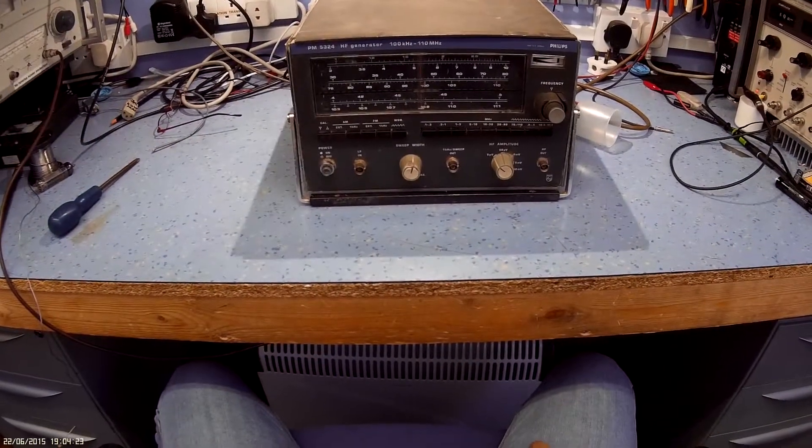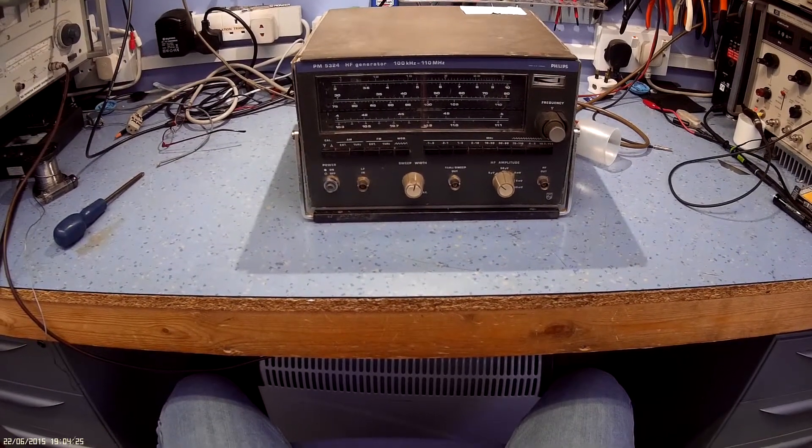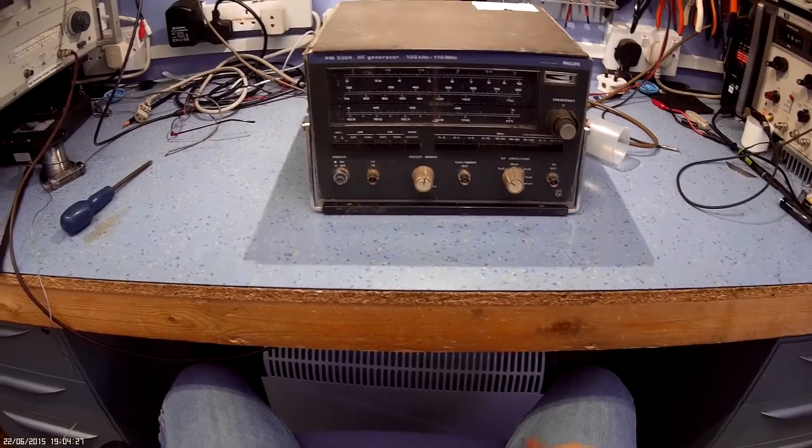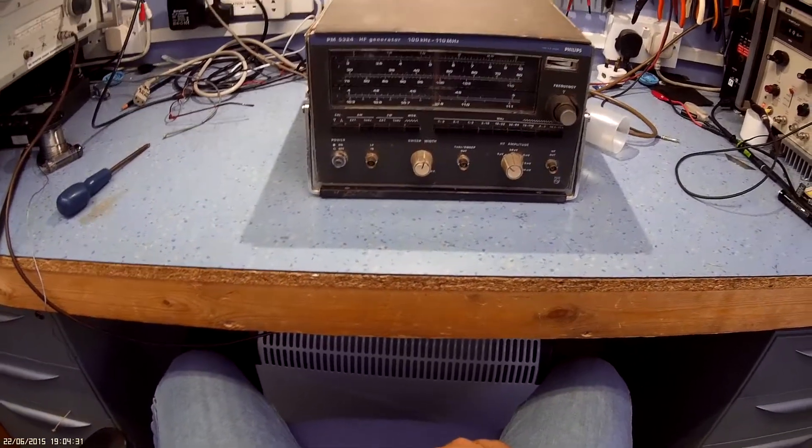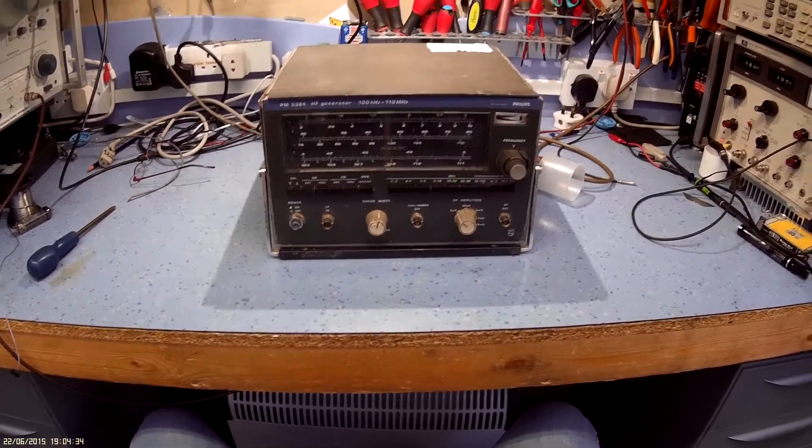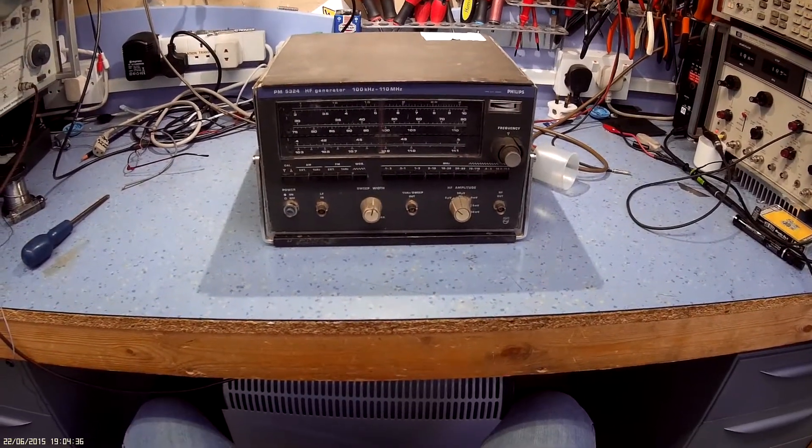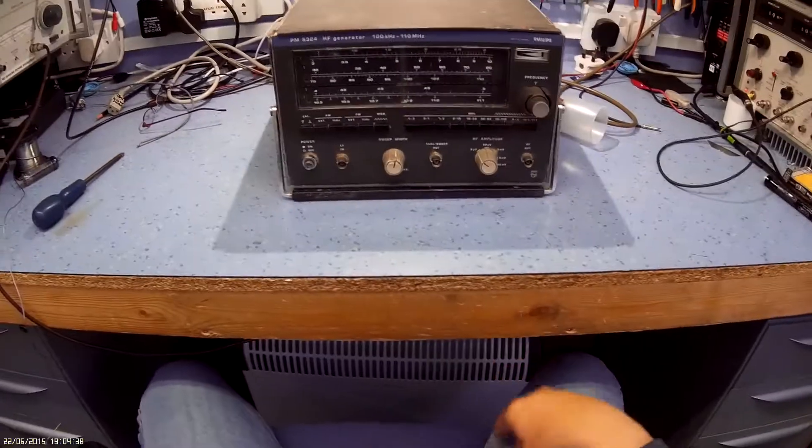This arrived in the post today. This is a Philips, what we British call a wobbulator. It's basically an RF frequency generator, sweep generator, designed for FM radio really.